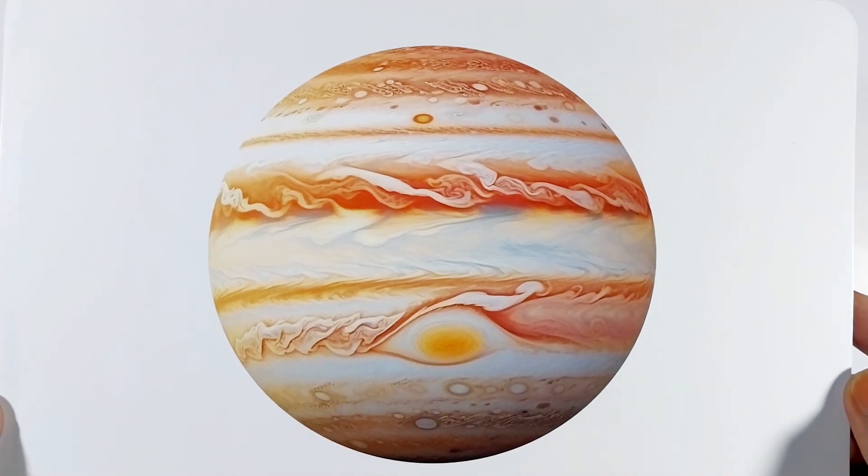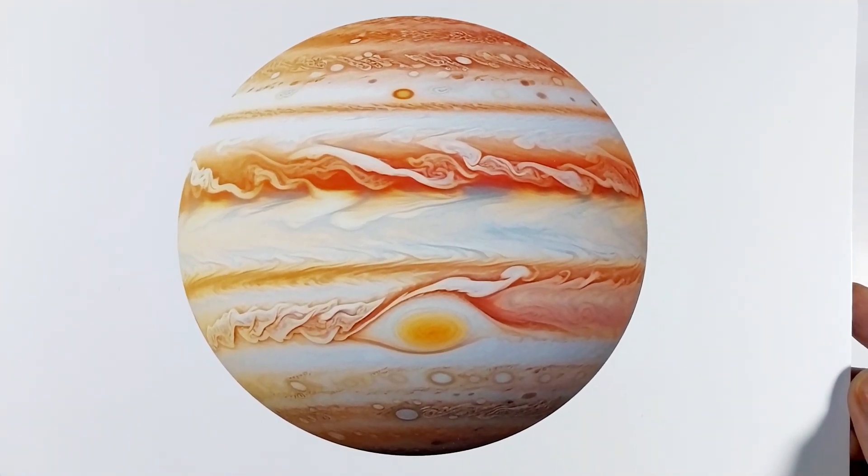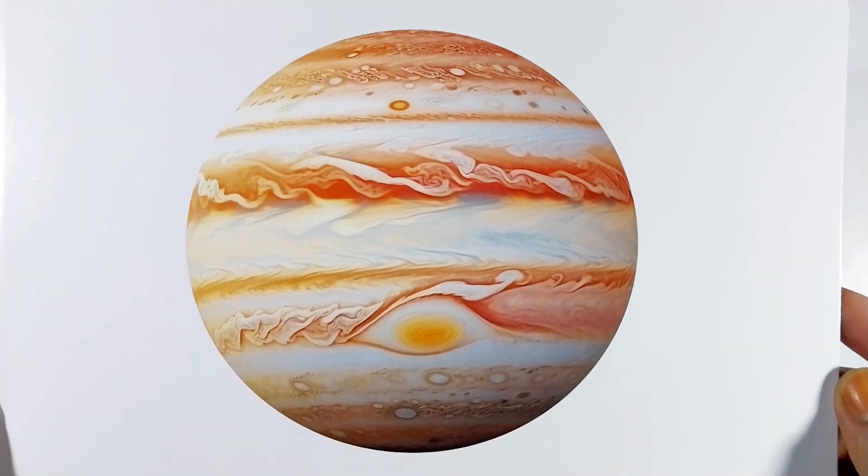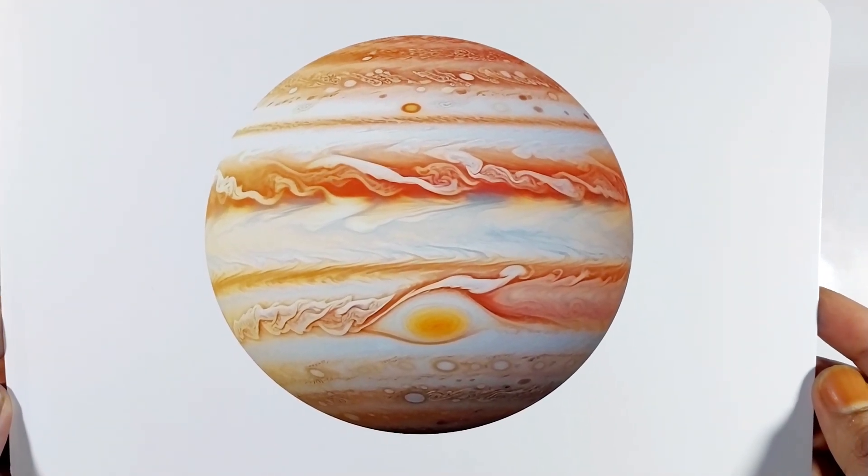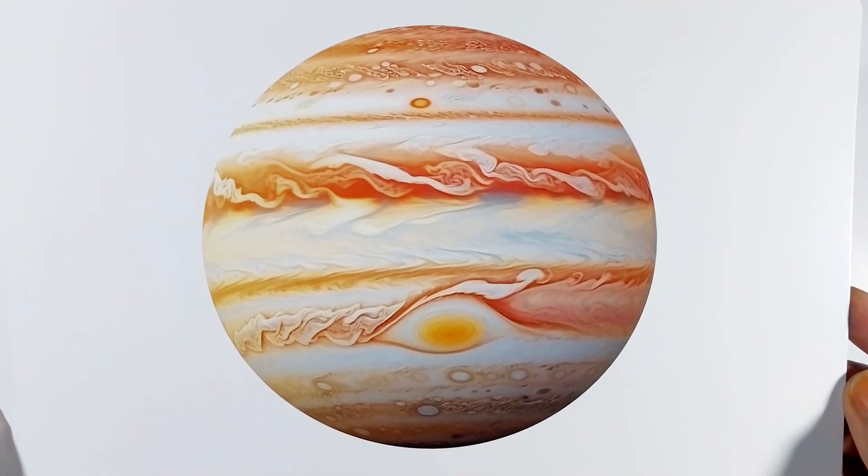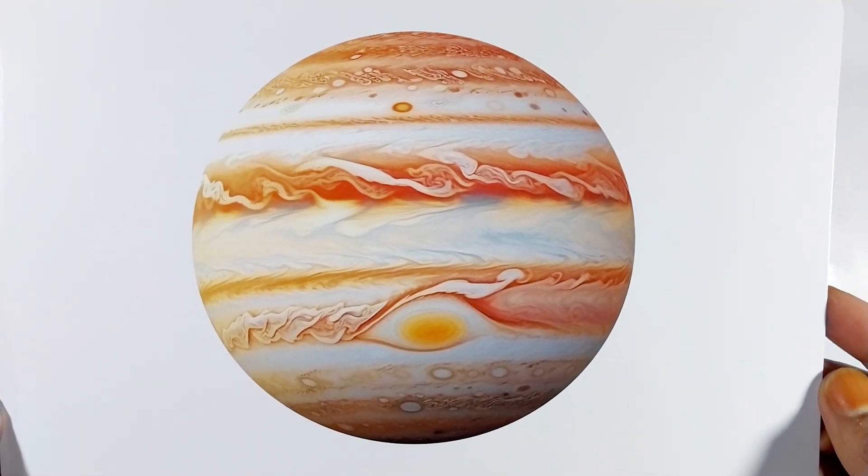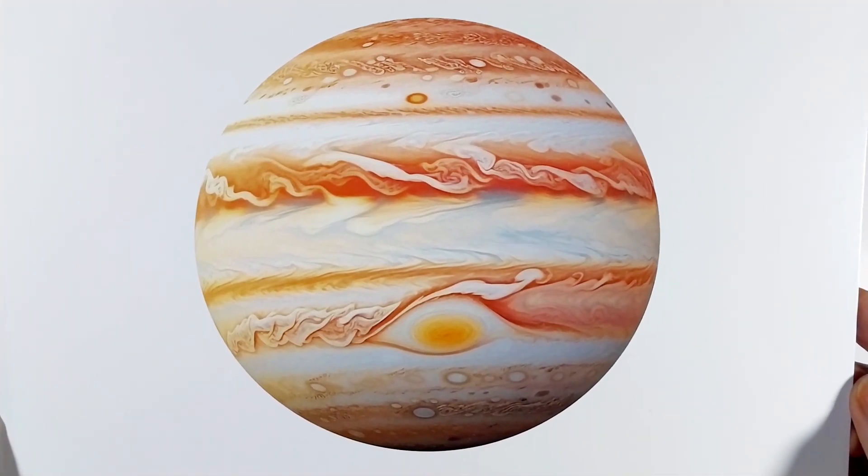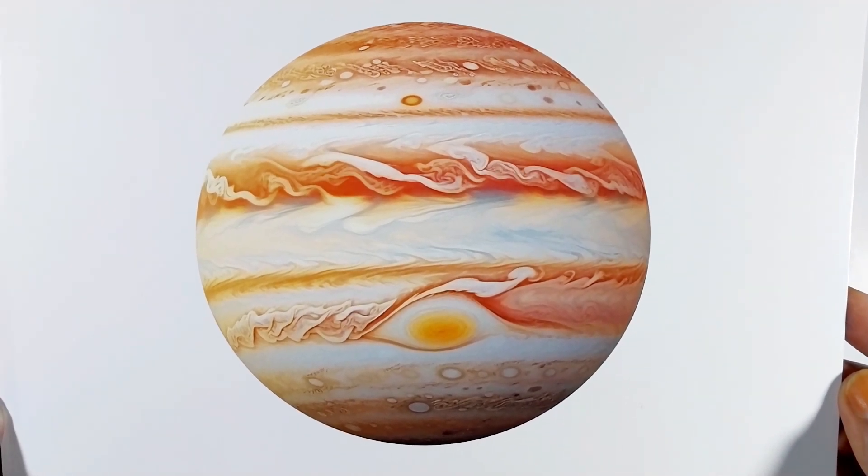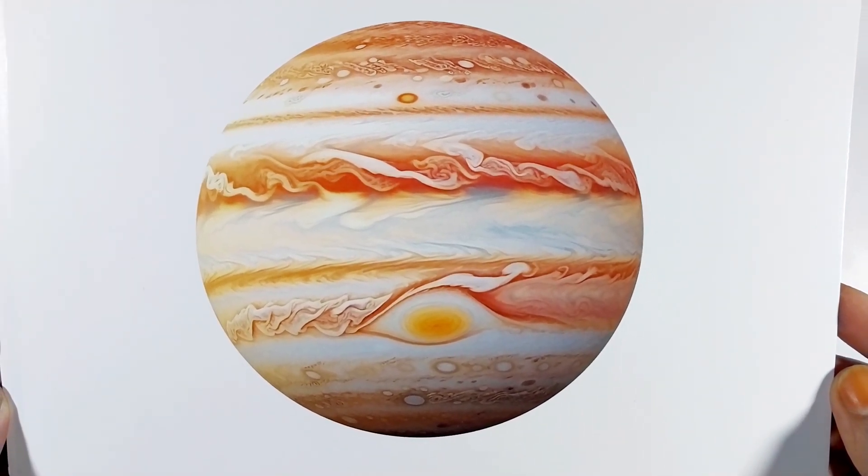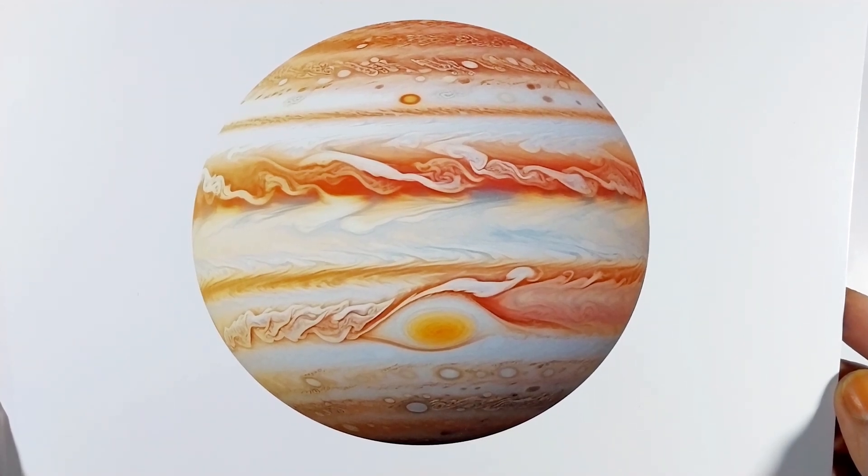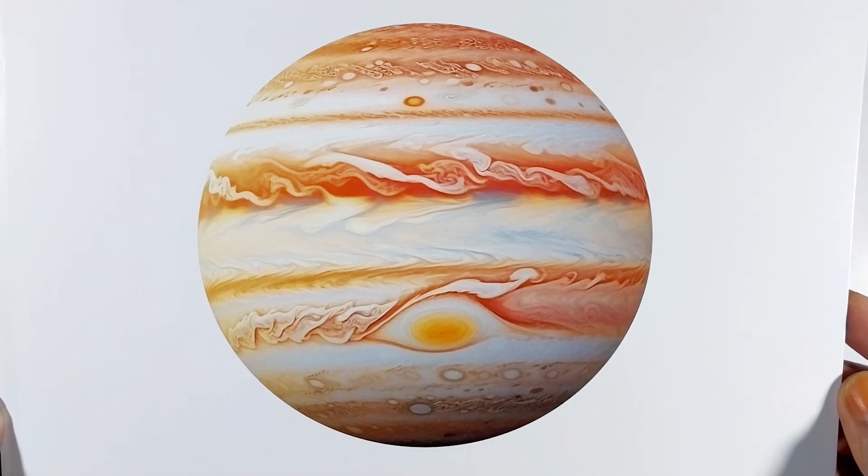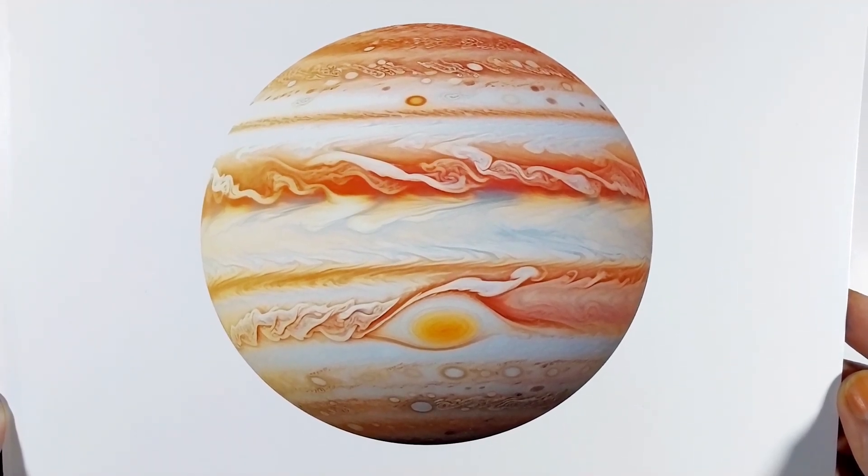Jupiter is the largest planet in our solar system, known for its distinctive bands of clouds and the great red spot, a massive storm. It has many moons, with the four largest ones known as the Galilean moons: Io, Europa, Ganymede, and Callisto. Jupiter is a gas giant composed mostly of hydrogen and helium, and it plays a significant role in shaping the orbits of the planets in the solar system.